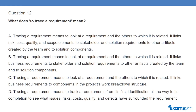Question 12: What does it mean to trace a requirement? A. Tracing a requirement means to look at a requirement and the others to which it is related; it links risk, cost, quality, and scope elements to stakeholder and solution requirements, to other artifacts created by the team, and to solution components. B. It links business requirements to stakeholder and solution requirements, to other artifacts and solution components. C. It links business requirements to components in the project's work breakdown structure. D. Tracing a requirement means to track a requirement from its first identification all the way to its completion to see what issues, risks, costs, quality, and defects have surrounded the requirement.